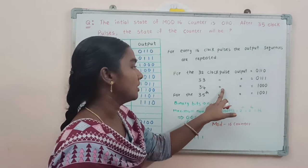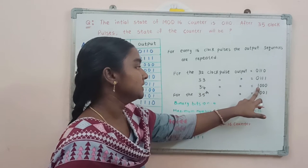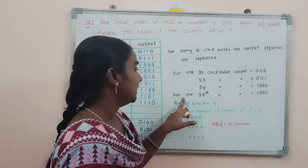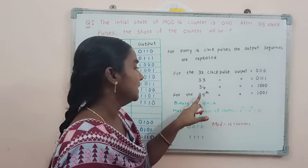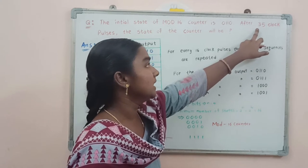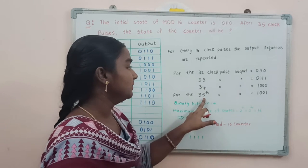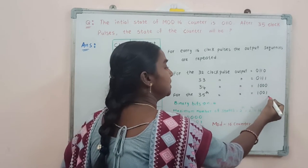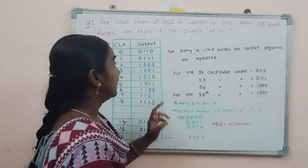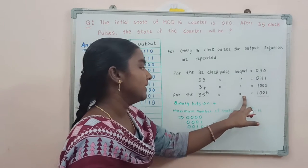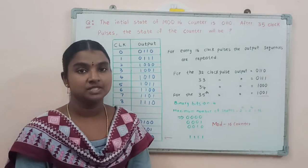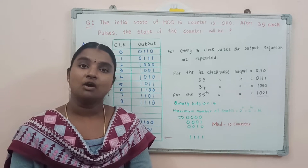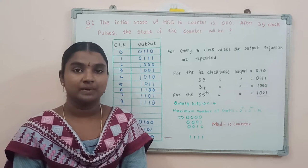After applying the 34th clock pulse, the next counting sequence is 1000. And after applying the 35th clock pulse — which is the required clock pulse asked in the question — the output is going to be 1001. In this manner we can find any counting sequence after applying clock pulses.